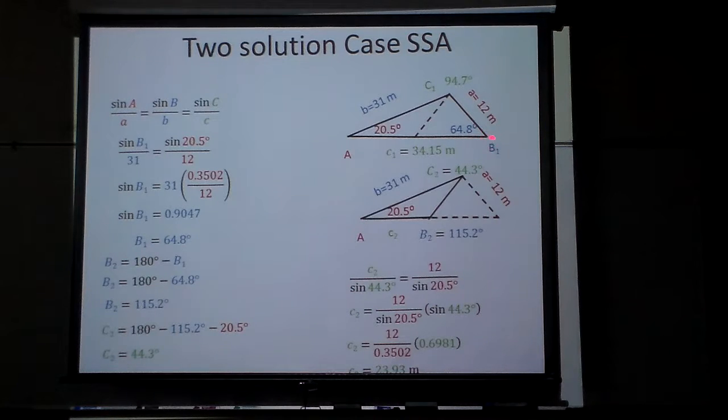And the way you get the second one is just taking that angle you found right there, 64.8 and minusing it from 180 because remember the sine of 115.2 and the sine of 64.8 both are 0.9047. That's why there's two possible answers for this.